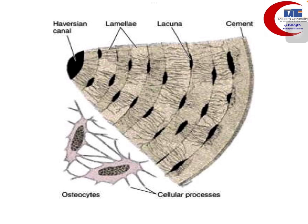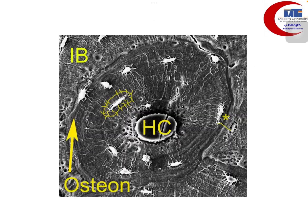We can see that osteocytes, with their processes connected through gap junctions with adjacent osteocytes, can transmit molecules, nutrients, and signals between each other in a seamless manner at a large scale.